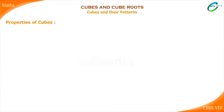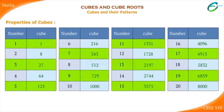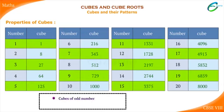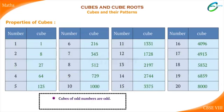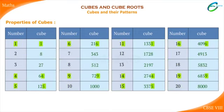Properties of Cubes. Let us now see some properties of cube numbers. The cubes of odd numbers are odd. The cubes of even numbers are even. Observe that the cubes of the numbers ending in 1, 4, 5, 6, or 9 end with the same digit.